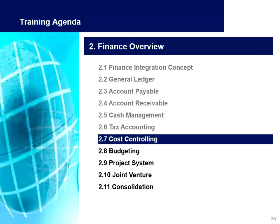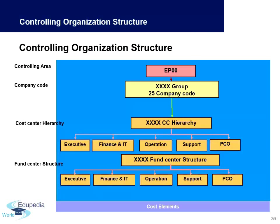Now moving to CO-related sub-modules: cost controlling is a wide and vast subject. Within cost controlling, you have a hierarchy consisting of a controlling area, multiple company codes, a cost center hierarchy, and a fund center structure. The cost center hierarchy is decided by management and can be divided into finance, operations, support, HR, etc.